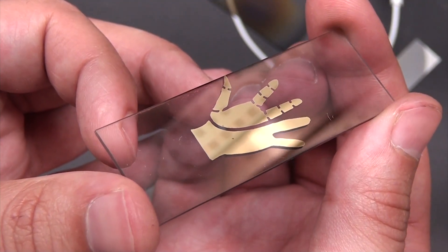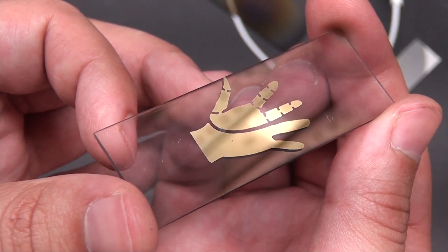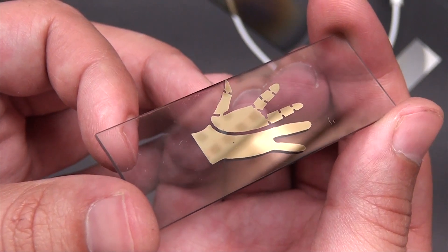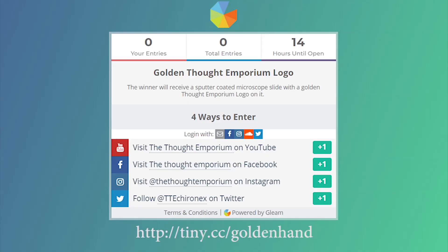Now about the giveaway. Like I said, I'll be giving away two of these gold Thought Emporium logos, one to my patrons, and one to everyone else. So if you'd like to be entered in the giveaway, click the link in the description, or go to the link you see on screen. For patrons and channel members, I'll be posting a separate link for all of you. You'll get more entries for doing things like following me on Twitter, or visiting my various pages. While you're there, feel free to subscribe and follow me, but that isn't a requirement for the giveaway. I'll announce the winners in the next video, and send you an email to get your mailing address.